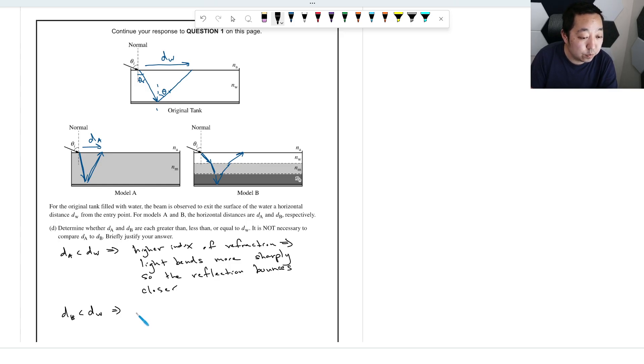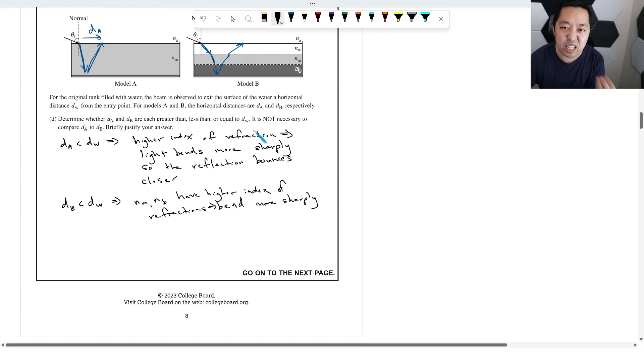And it's almost a similar reasoning. It's again because NM and NB have higher index of refractions, which means that it's going to bend more sharply again. So it's almost the same reasoning, bend more sharply. You could just probably combine those reasonings together into a single argument, but basically it's going to bend more sharply and so it's going to come out sooner than the original one there. But the key thing is talk about the index of refraction and the fact that it's going to bounce a little bit faster there.